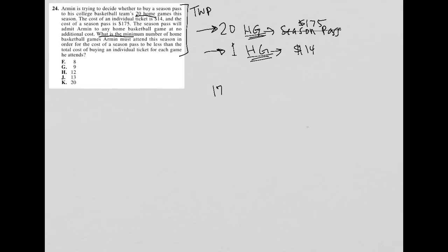Armin must attend this season in order for the cost of a season pass, so the cost of a season pass is $175, to be less than the cost of buying an individual ticket. So this is $14, and I'm going to say X, where X means the number of home games. Here is my translation of the actual question part.